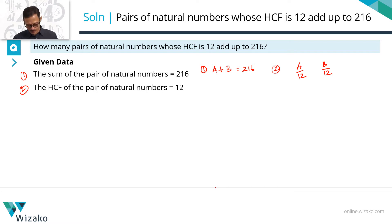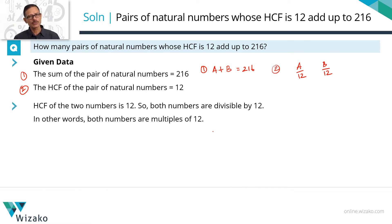If a number is divisible by 12, obviously that number has to be a multiple of 12. So we can infer that because the HCF of these two numbers is 12, these two numbers are divisible by 12, or in other words, these two numbers are multiples of 12.